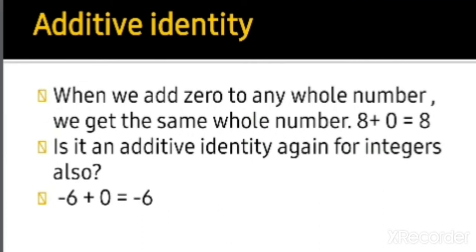Additive identity: when we add 0 to any whole number we get the same whole number. This also applies to integers. For example, minus 6 plus 0 equals minus 6. Any number added to 0 gives that number itself. So the additive identity is 0.